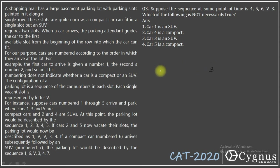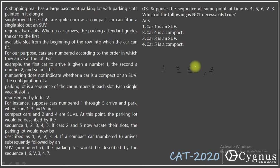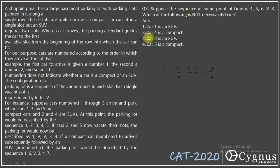If you look at the position of car 3, there are 4 places before it. That means cars 1 and 2 must both be SUVs — that's why there are 4 places before the 3rd car. Car 1 is an SUV: yes, it has to be. Car 4 is a compact: yes, because car 4 occupies only one place. Car 3 is an SUV: I'm not sure about that — it may or may not be. So that is not necessarily true. Car 5 is a compact: yes, because car 5 has occupied only one place. So my answer is the 3rd option.